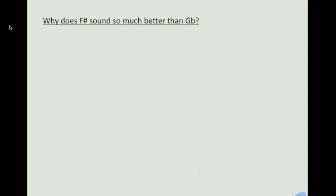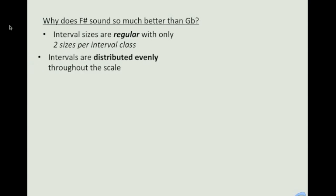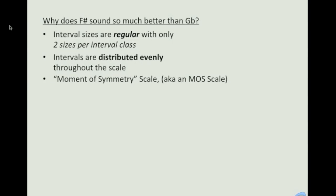Well, the decision to define our scales by unbroken chains of fifths is not arbitrary. Scales created by continuous unbroken chains of one given interval have perceptually relevant properties in music, where interval sizes are regular, with only two sizes per interval class, a.k.a. major and minor, and where the different step sizes are distributed evenly throughout the scale. For example, the diatonic scale has the minor seconds as far apart as possible among the major seconds. Such scales are called moment of symmetry, or MOS scales.